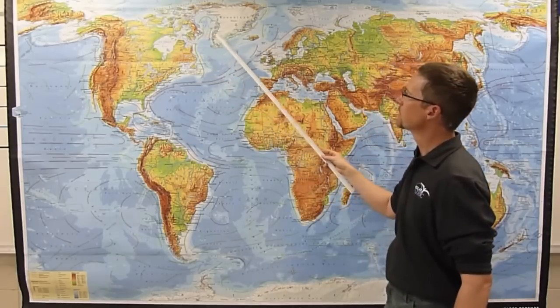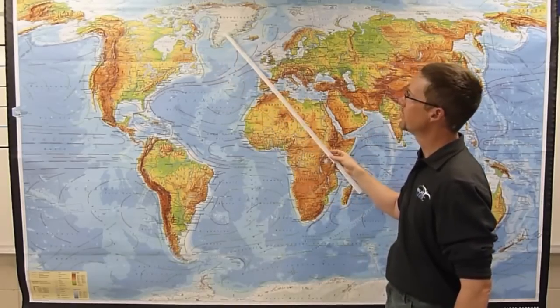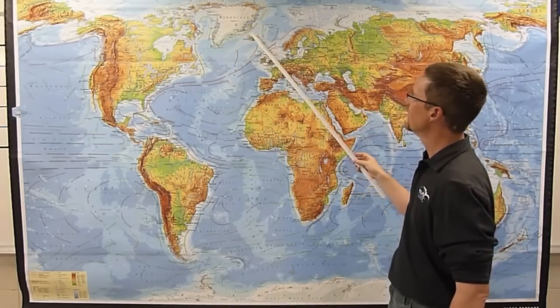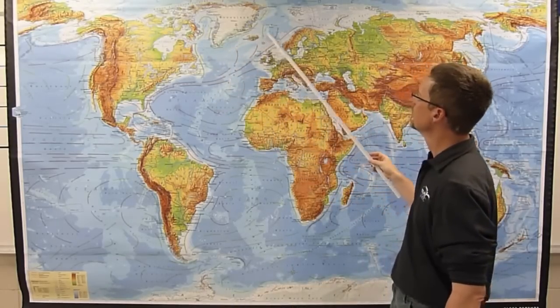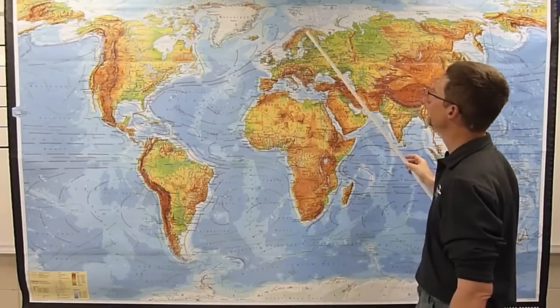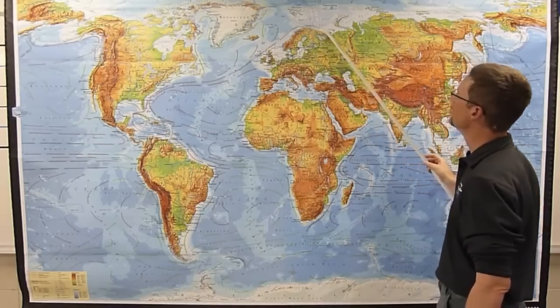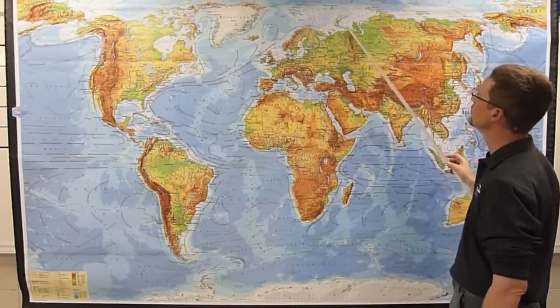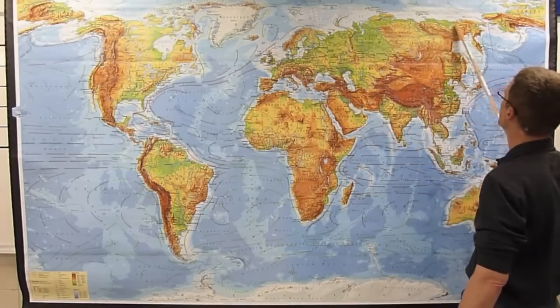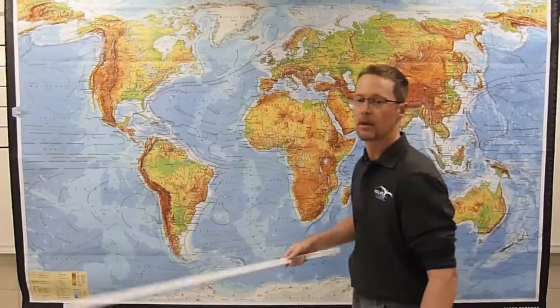The Arctic Circle continues across the northern parts of Canada, goes across the southern part of Greenland, just over Iceland, through Norway, Sweden and Finland, and back into Russia all the way across Siberia, back to Alaska.